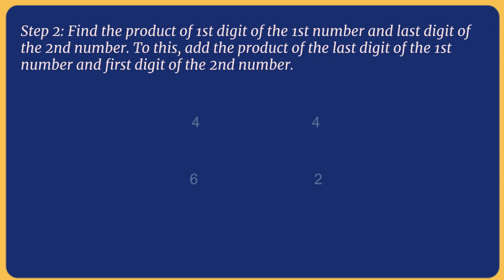In this step, we'll find the product of the first digit of the first number and the last digit of the second number. To this, we'll add the product of the last digit of the first number and the first digit of the second number. A simpler way to remember is criss-cross multiplication and adding both the products. So 4 x 2 is 8 and 4 x 6 is 24, hence adding both of them, we get 32.